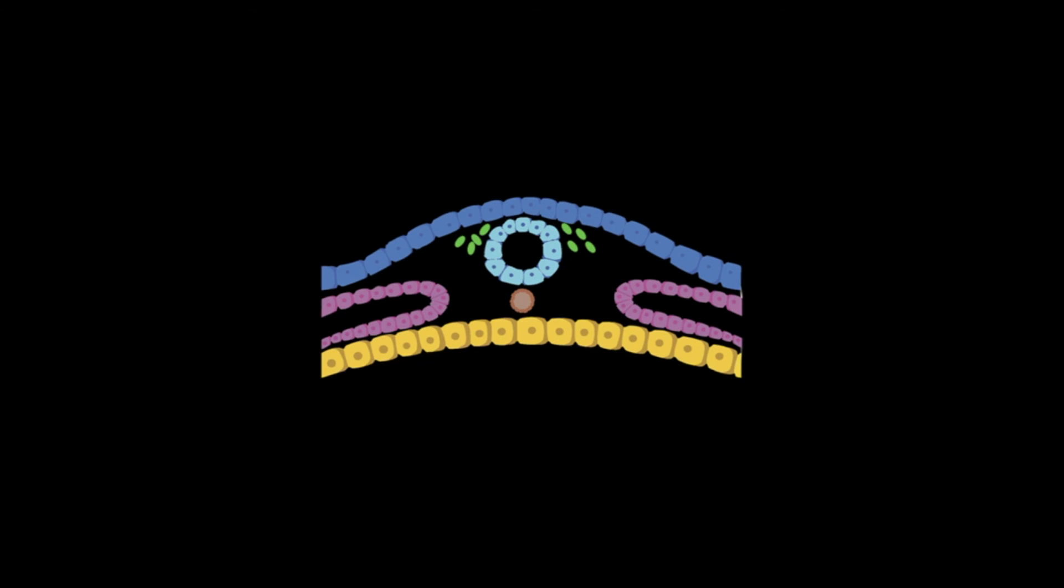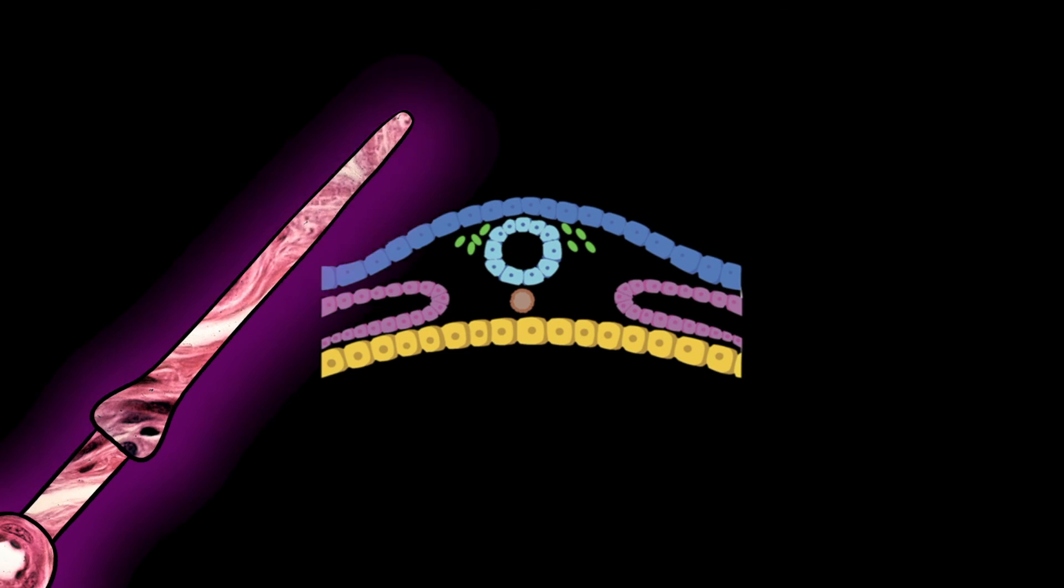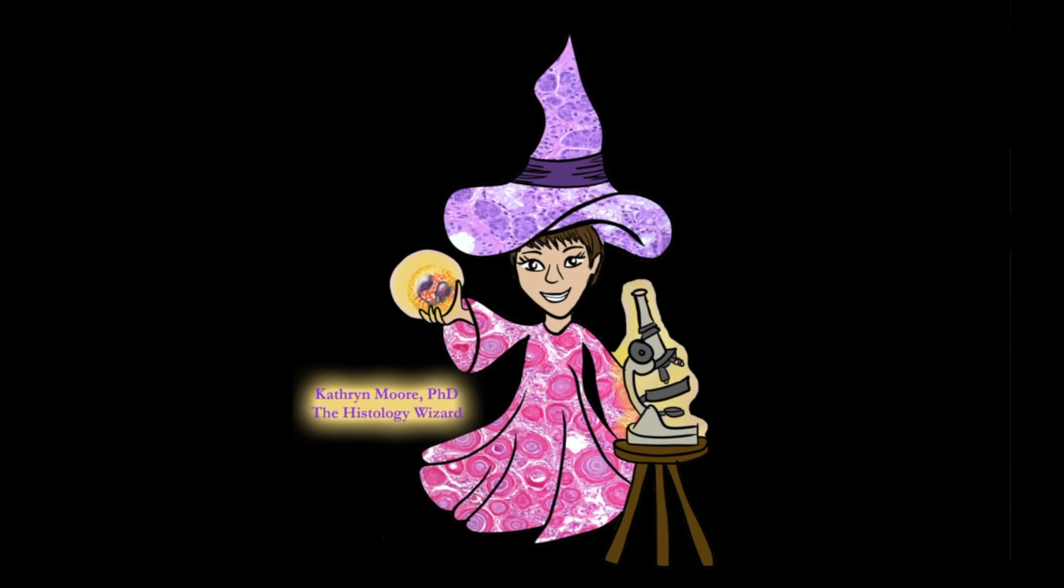Let's recap. By day 28, we've altered the fate of some of the surface ectoderm to make neuroectoderm. That neuroectoderm has formed a closed tube, and that tube is now inside the body, and the neural crest cells have formed. At this point, the basic pattern of the nervous system is set up. In the next two videos, I'll cover early patterning and neural crest formation and migration. Thanks for stopping by.